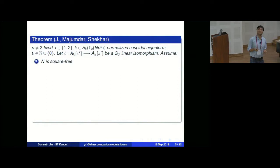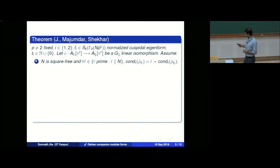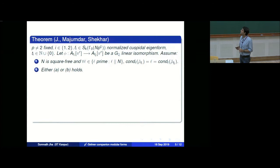If N has a square factor, the local Galois representation becomes difficult to handle, so we exclude that case. We also have the condition that for all primes L dividing N, the conductor of the residual representation equals L — this is the conductor hypothesis. I will make a comment about the corresponding hypothesis in Mazur-Rubin.